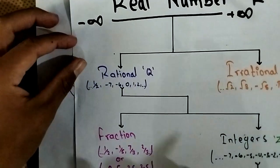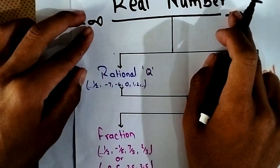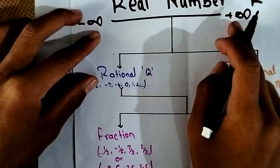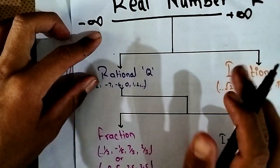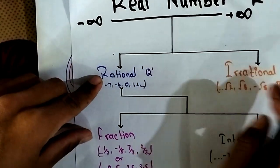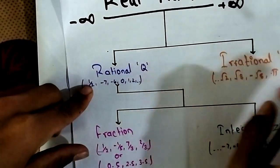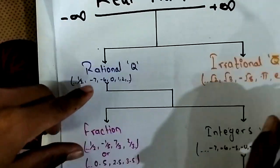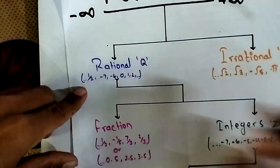The real number includes both rational and irrational numbers. Let us now focus on rational numbers.